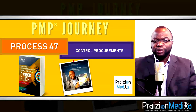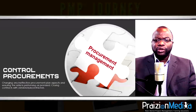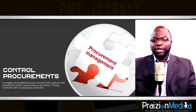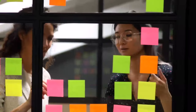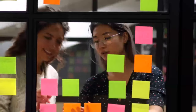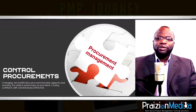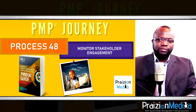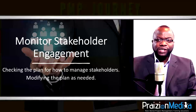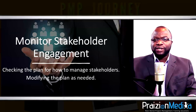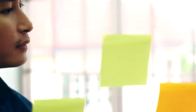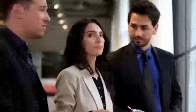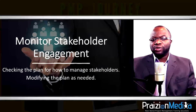Process 47: Control procurements. The project manager and team should ensure that the vendor or subcontractor is doing the right thing and following the plan. If not, you must steer the project in the right direction. Process 48: Monitor stakeholder engagement. The project manager and team should check that the stakeholder is as engaged as he or she needs to be, and make sure the plan is updated or modified according to real needs.